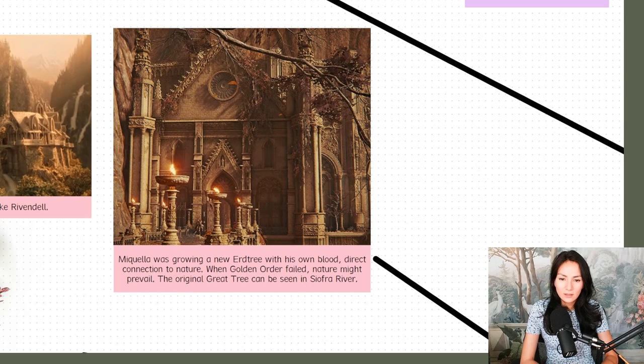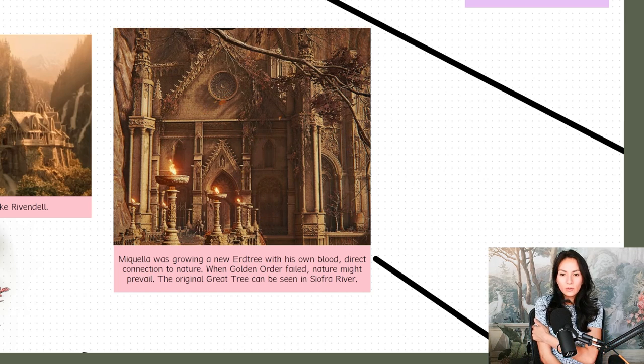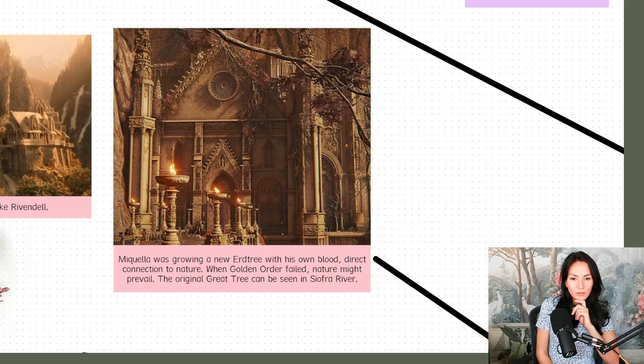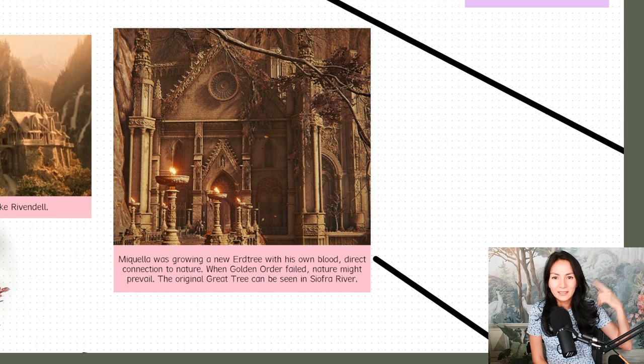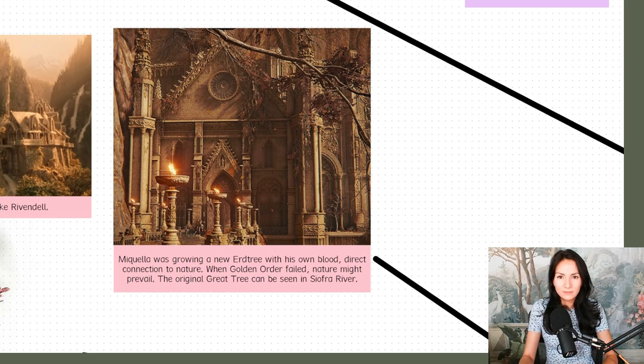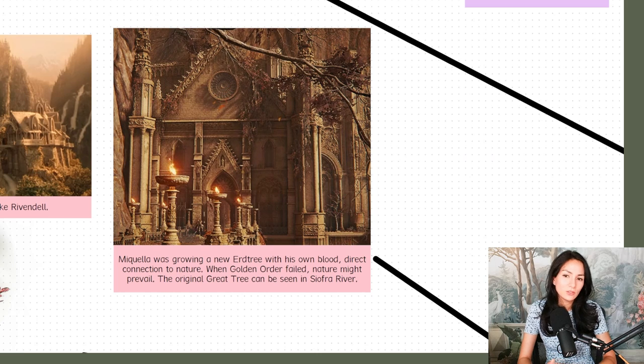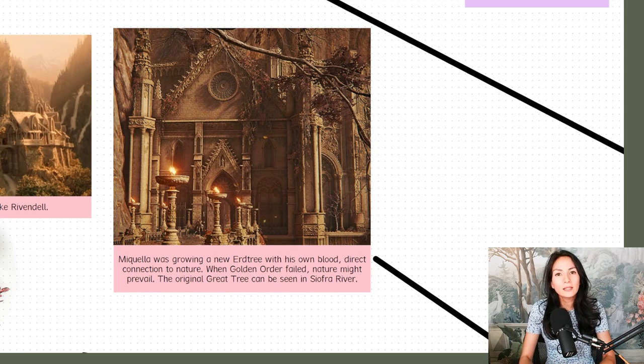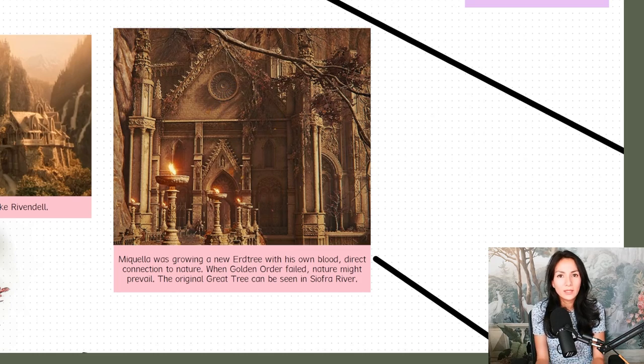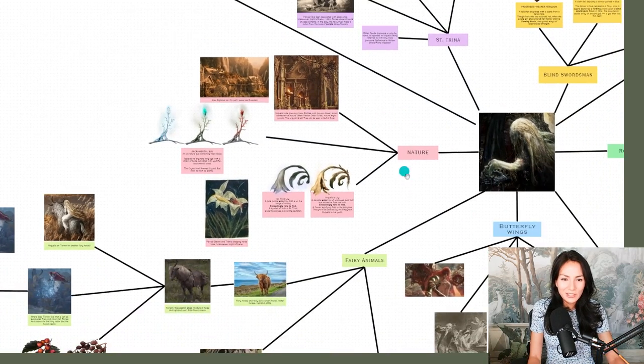Miquella was growing a new Erdtree with his own blood. Direct connection to nature. When the golden order failed, nature might prevail. The original great tree can also be seen in Siofra River. So that is nature.